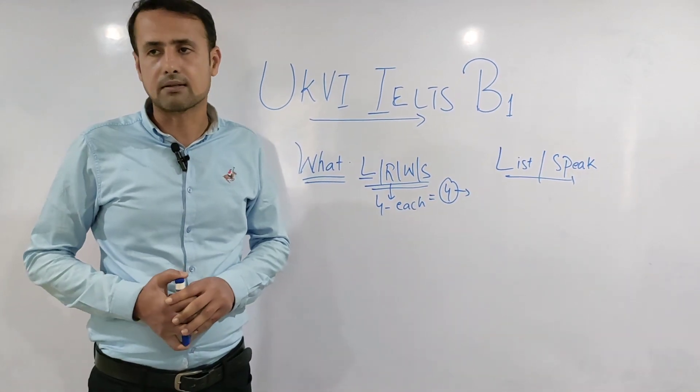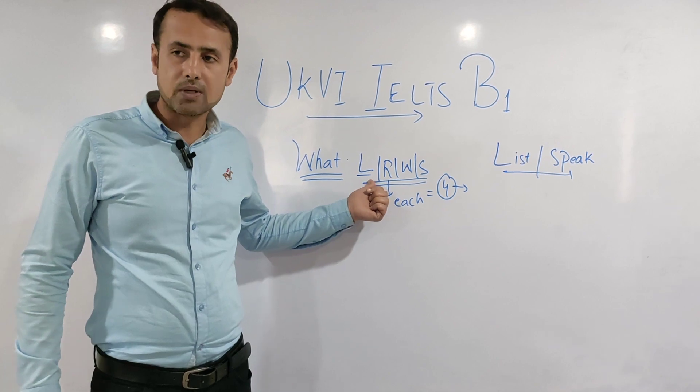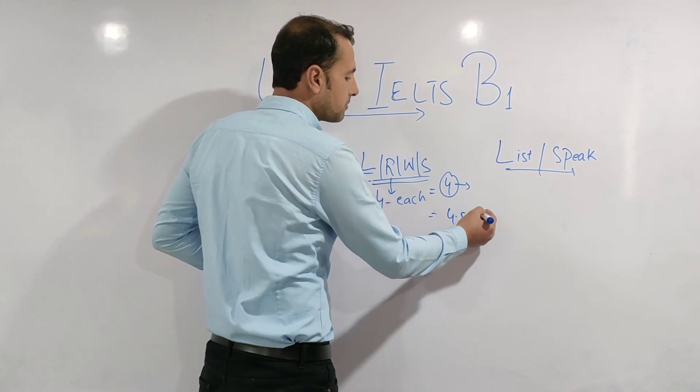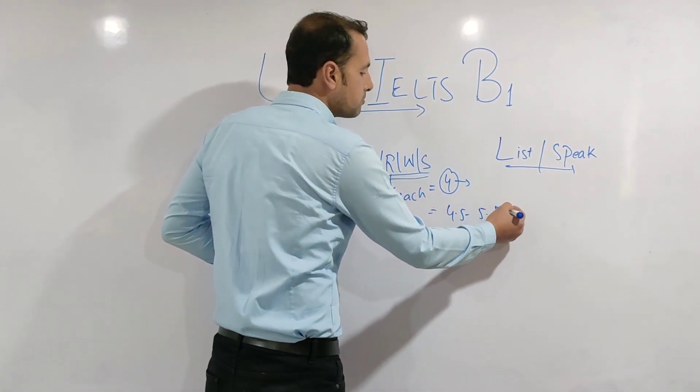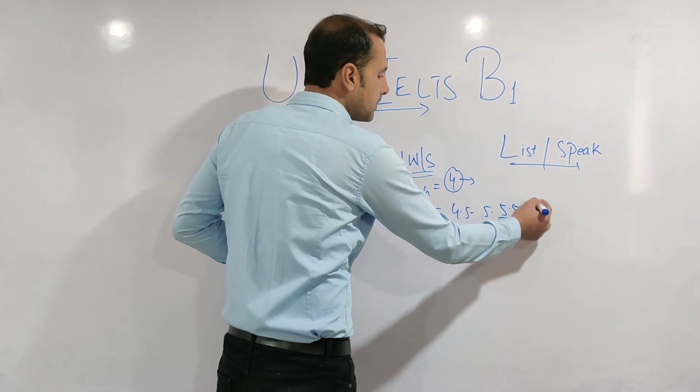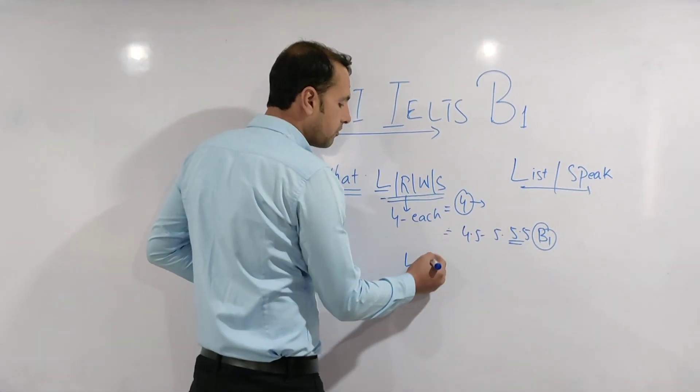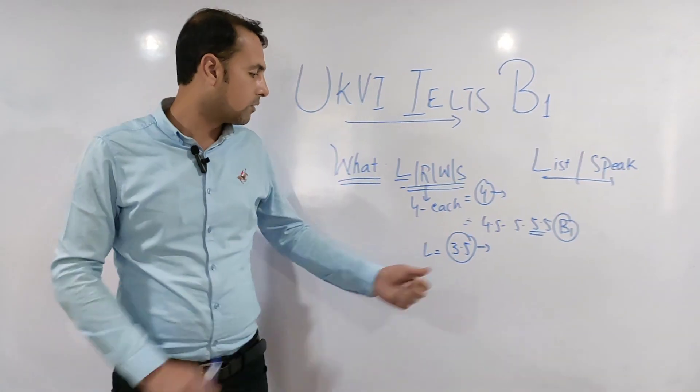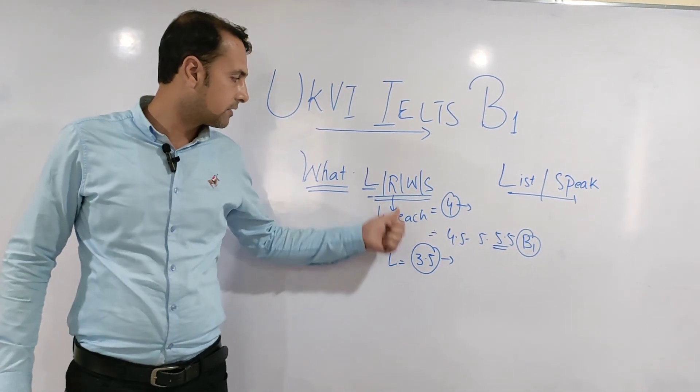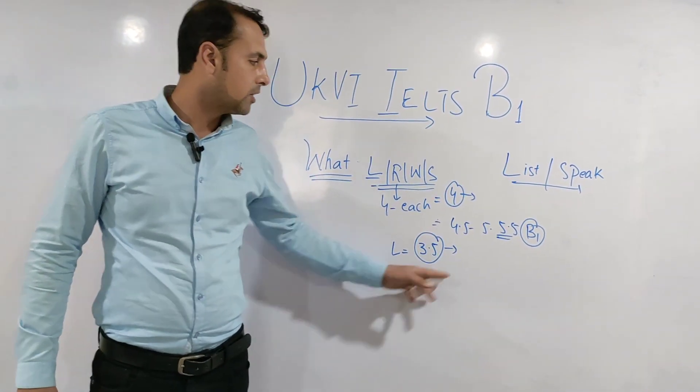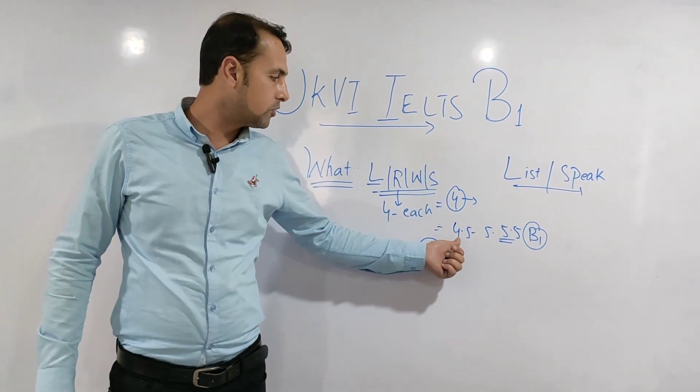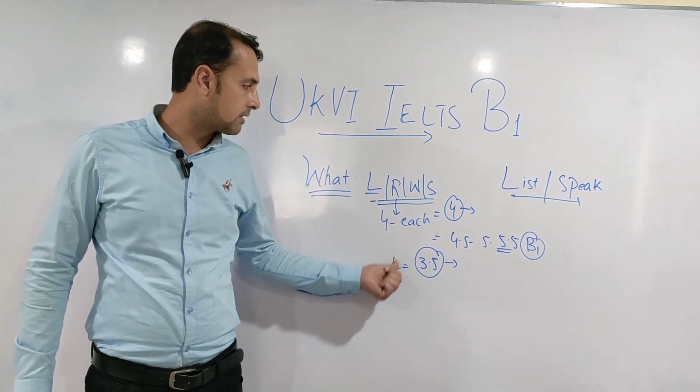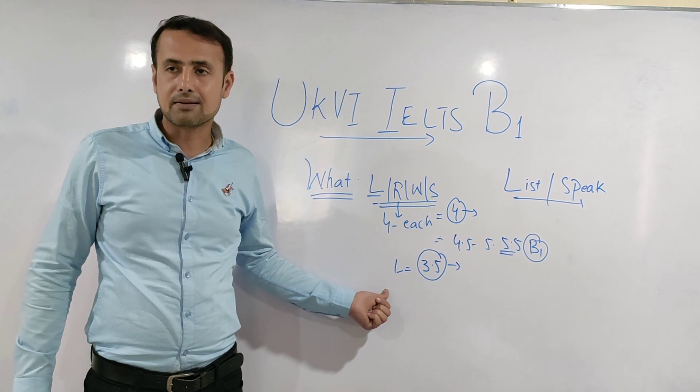Sometimes students who score 4.5 or 5.5 - their level is B1, but if they fall below four in any skill, like in listening they have 3.5 or in reading they have 3.5, their overall level would be B1, but the case won't be accepted because they fell below four in an individual skill.